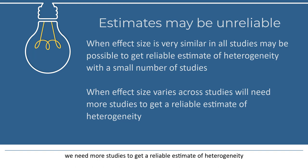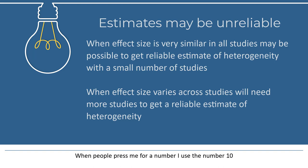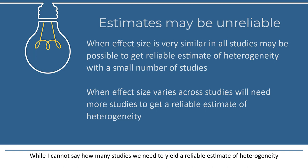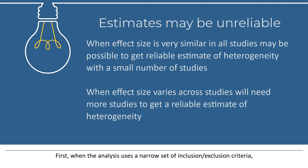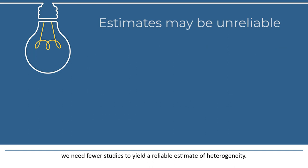There's no rule of thumb for how many studies are needed to yield a reliable estimate of heterogeneity. When people press me for a number, I use the number 10, but I intend that primarily to provide a sense of scale — in other words, the number is not 3. While I cannot say how many studies we need, there are some general principles we can keep in mind. First, when the analysis uses a narrow set of inclusion-exclusion criteria, we need fewer studies to yield a reliable estimate of heterogeneity. Conversely, when the criteria are set more broadly, we'll need more studies.